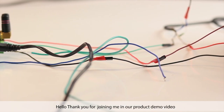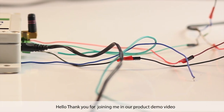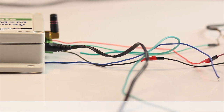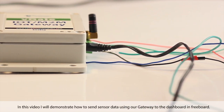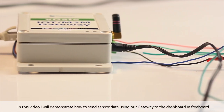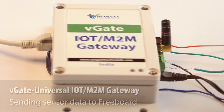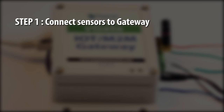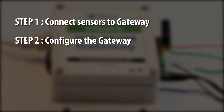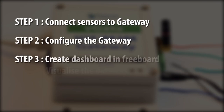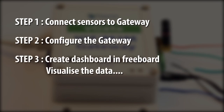Hello, thank you for joining me in our product demo video. In this video I will demonstrate how to send sensor data using our gateway to the dashboard created in freeboard. This can be achieved in three easy steps. Step one is to connect the sensors to the gateway. Step two is to configure the gateway, and step three is to create the dashboard in freeboard and start observing your data.